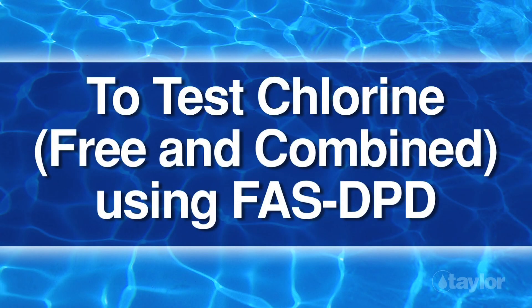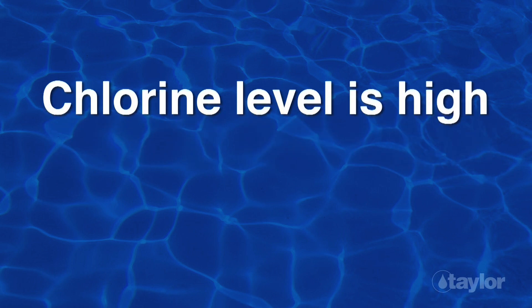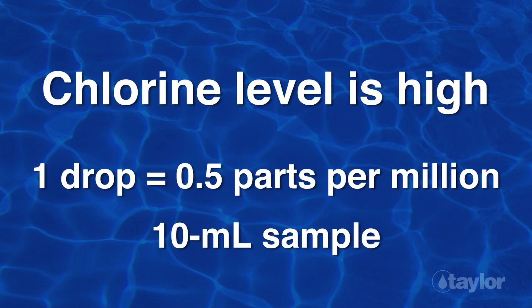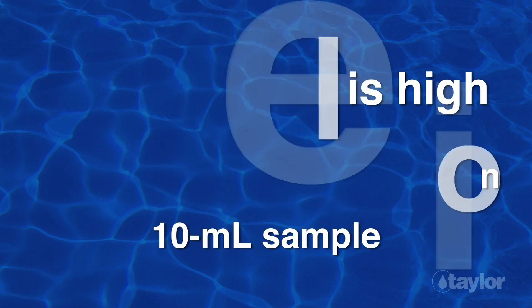To test free and combined chlorine using FAS DPD, first decide which drop equivalents to use. If you suspect the chlorine level is high, perhaps because the water has been shocked recently, use one drop equal to 0.5 parts per million and a 10 ml sample. This will save time and titrating reagent.